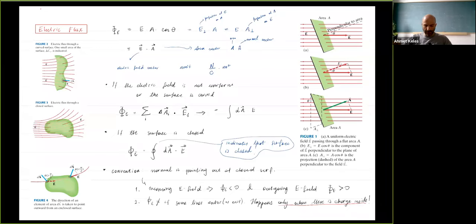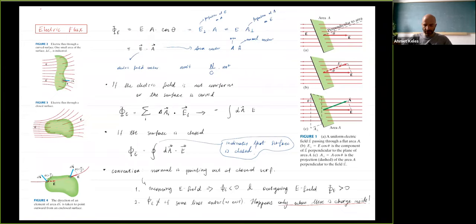Cosine comes from the dot product, and for this we introduce a dot product like this: the first vector is the electric field, the second vector is prepared from the area — it's the magnitude of area times a normal vector on that area, and we call this the area vector. The flux is then E dot A.